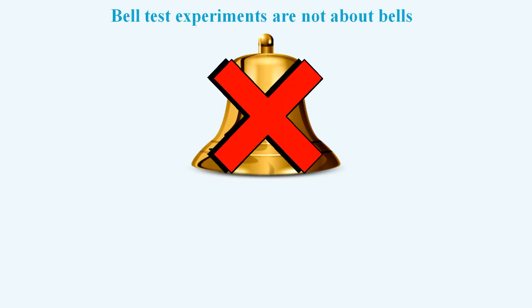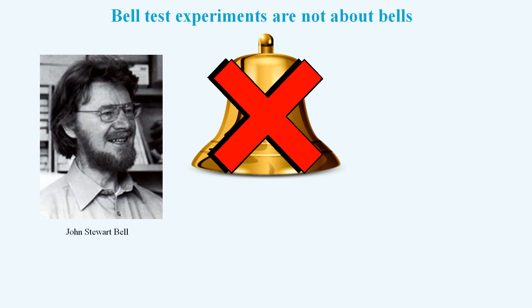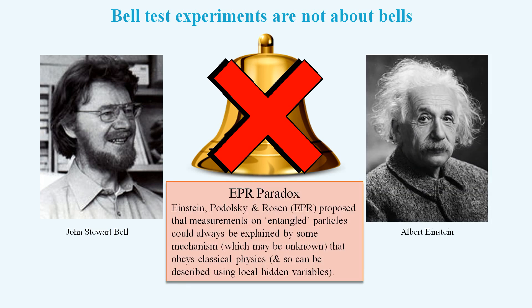Bell test experiments are not about bells. They take their name from the physicist John Bell, who devised a scenario for which Niels Bohr's quantum mechanics would produce different results to the thought experiment proposed by Einstein, Podolsky, and Rosen. John Bell's idea can be a bit difficult to get your head around, but hopefully the following description will be relatively easy to follow.